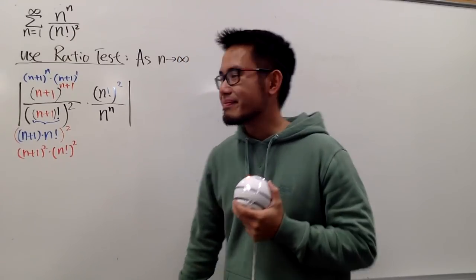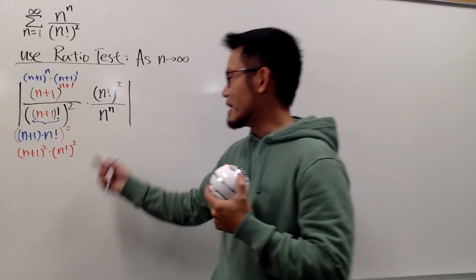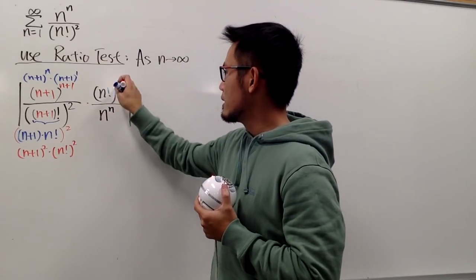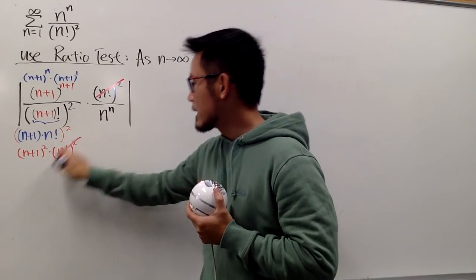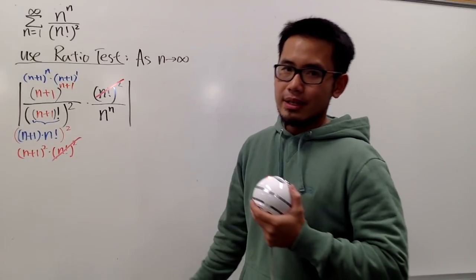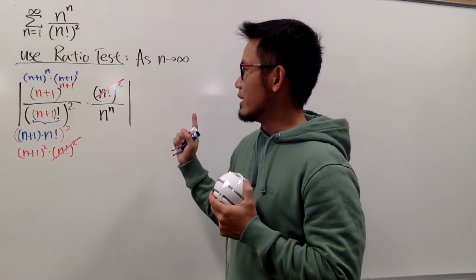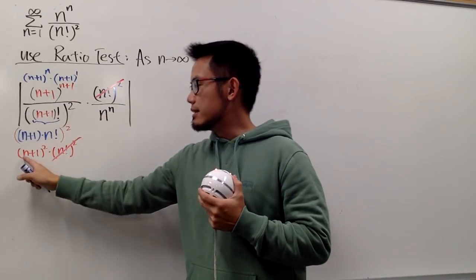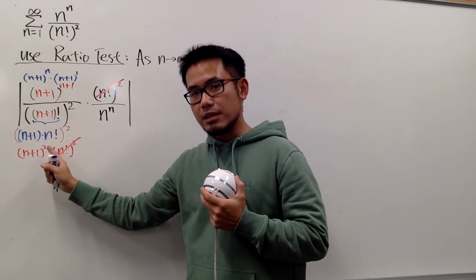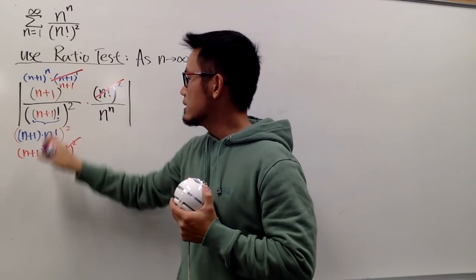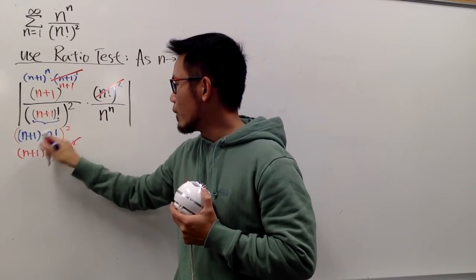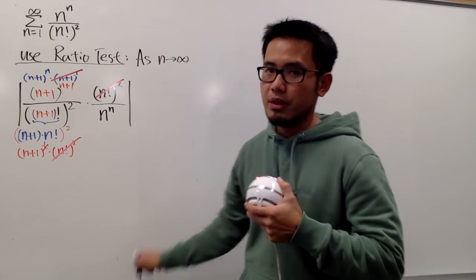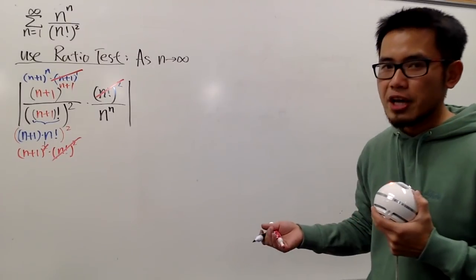Now cancel things out — this is the best part. The (n factorial) squared and this (n factorial) squared are gone. The n^n stays for now, and we have n+1 to the first power and n+1 to the second power, so we can cancel one of these out, leaving a 1. And that's pretty much what we can do in terms of algebraic simplification.